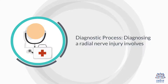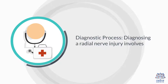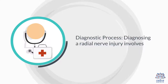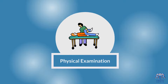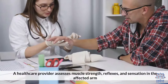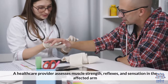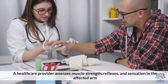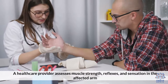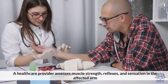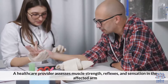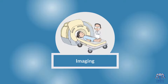Diagnostic Process: Diagnosing a radial nerve injury involves a physical examination in which a healthcare provider assesses muscle strength, reflexes, and sensation in the affected arm, as well as imaging studies.